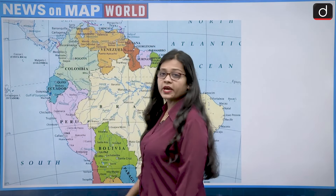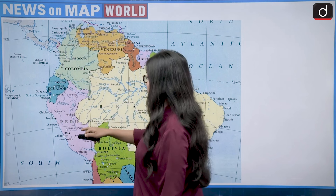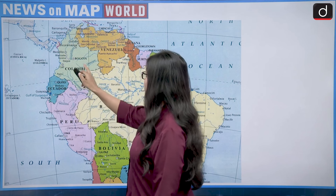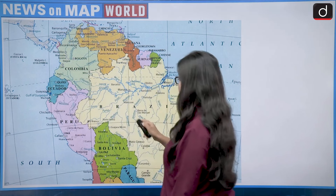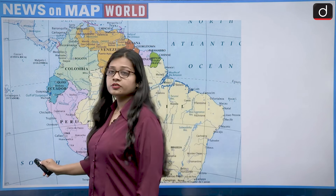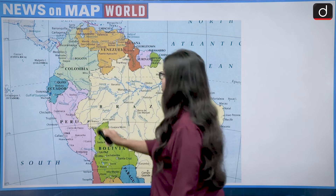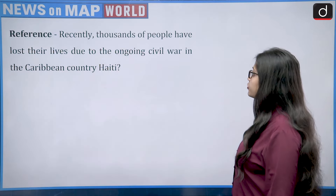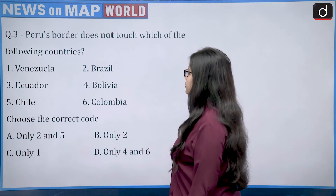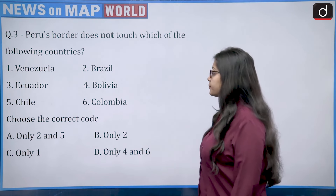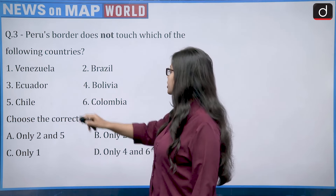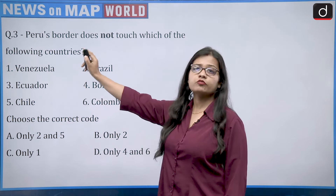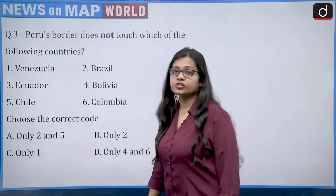Peru is a South American country. It shares its northern border with Ecuador and Colombia, its eastern border with Brazil, its southeastern border with Bolivia, its southern border with Chile, and to the west it borders the South Pacific Ocean. Going through the options — Brazil yes, Ecuador yes, Bolivia yes, Chile yes, Colombia yes — but Venezuela lies much further north, so Peru does not share a border with Venezuela.